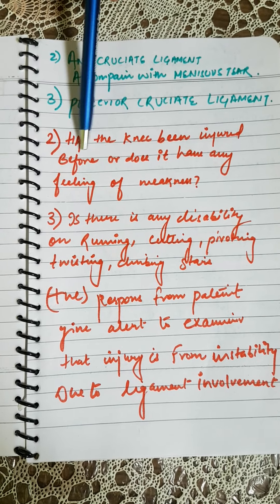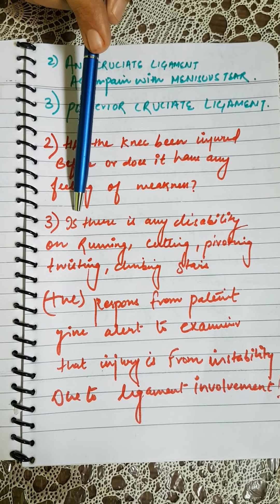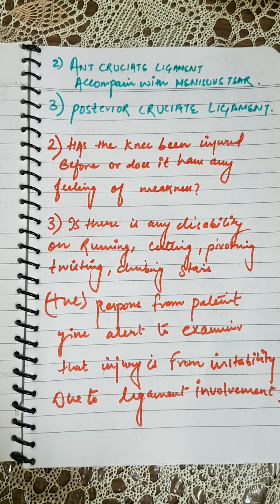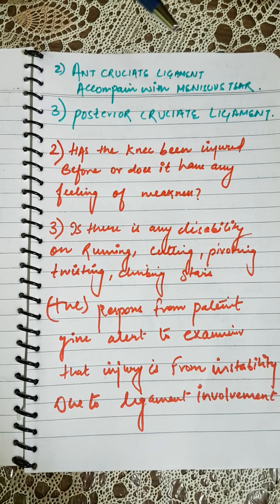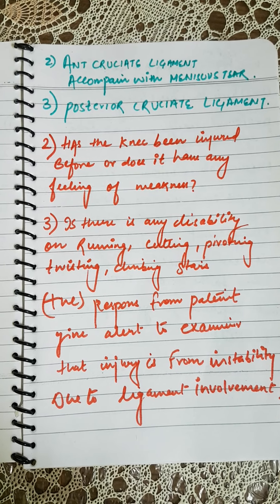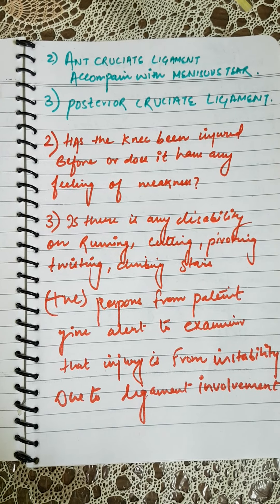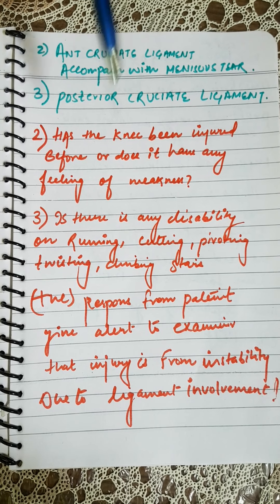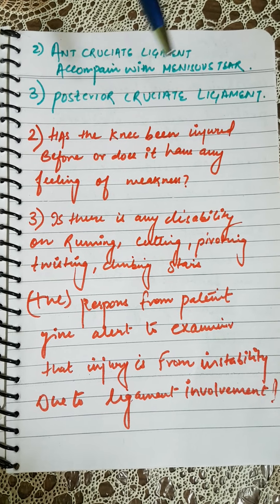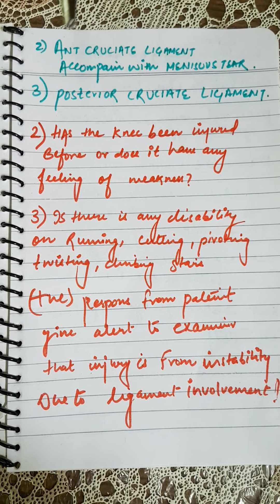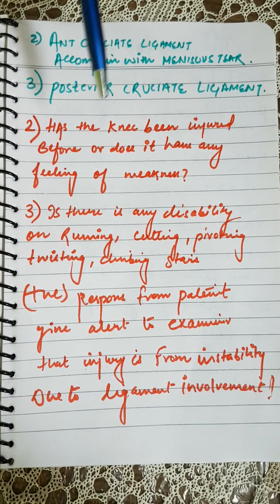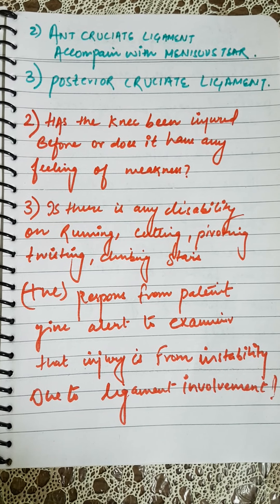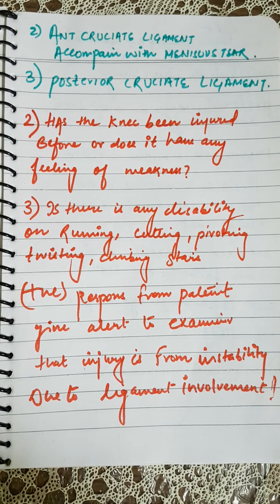The third question is whether the patient has any disability — what they are able or unable to do functionally. Is there any difficulty with running, cutting, pointing, pivoting, twisting, or climbing and descending stairs? Positive responses should alert the examiner to instability caused by some injured ligament.